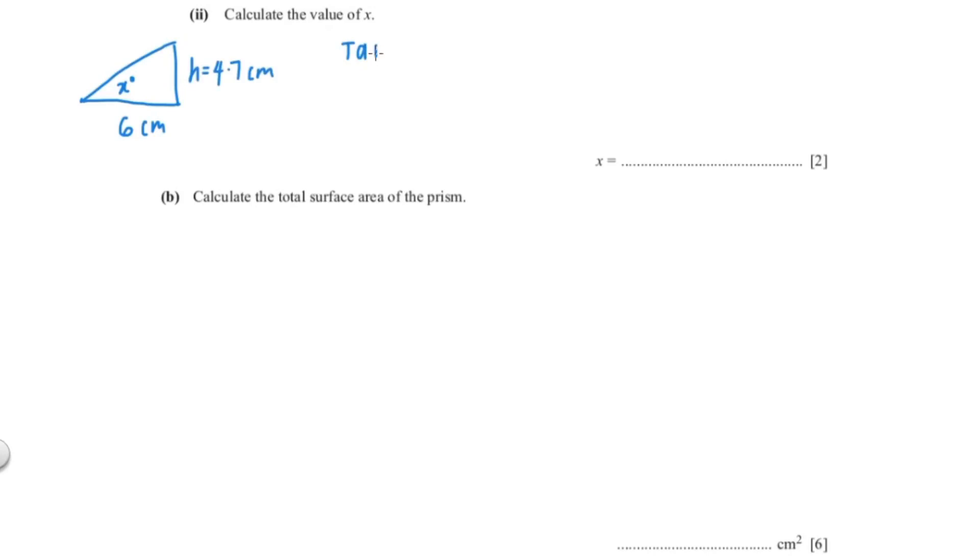Because it's a right angle triangle we can use the tangent. So tangent of x would be opposite which is 4.7 over adjacent which is 6. So our x would be shift tan 4.7 over 6. You put that into your calculator and you should get 38.07 which I'm going to round to 1 decimal place because we're finding an angle.